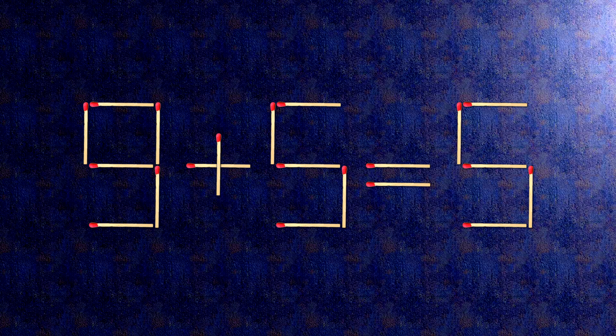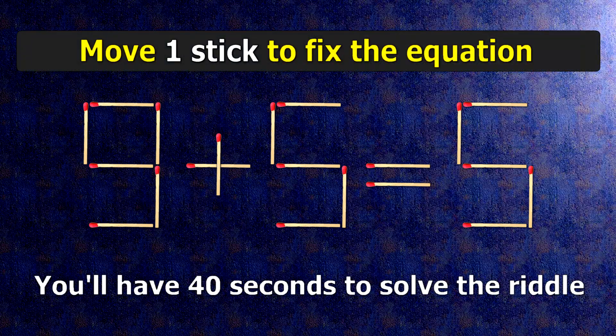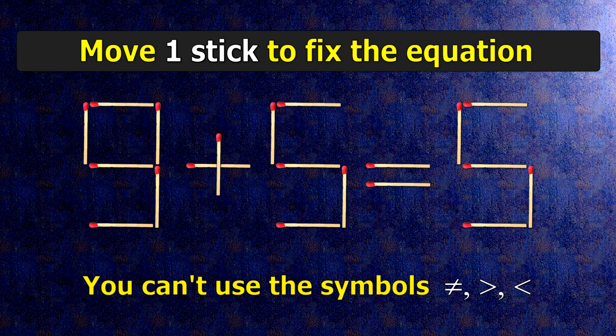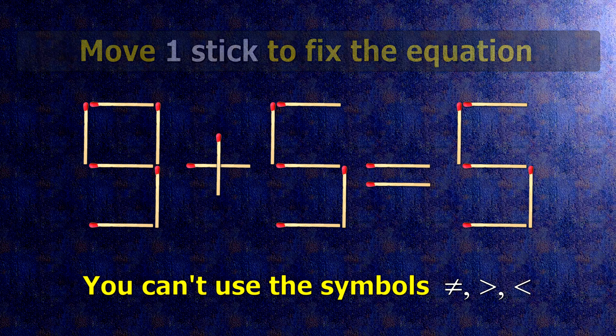We have the equality: 9 plus 5 equals 5. Our equality is wrong. We need to move one match to make our equality correct.